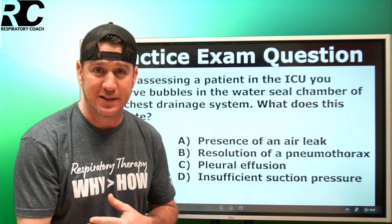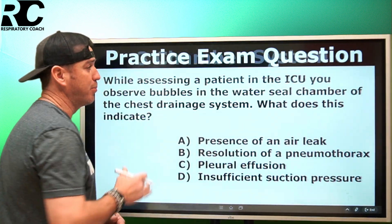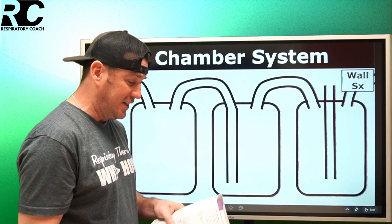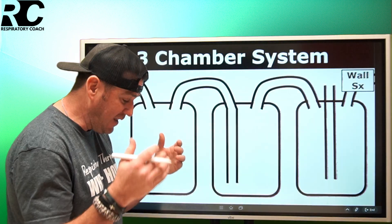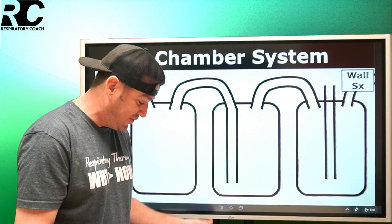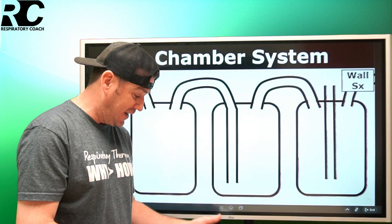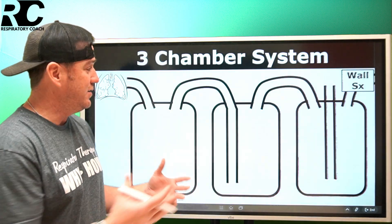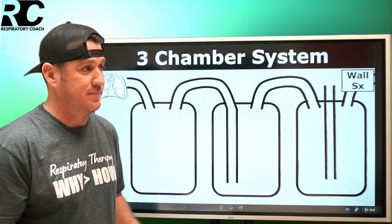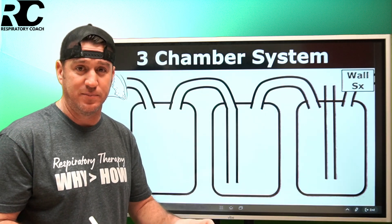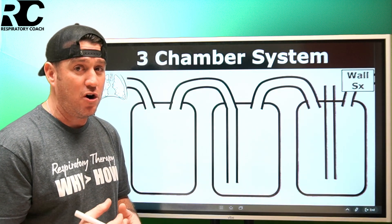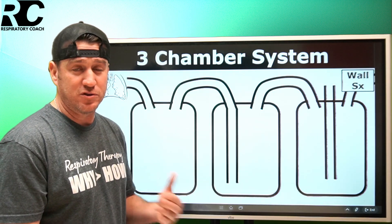We're going to come back to that question in just a second, but let's first break down the three-chamber system. Egan's 13th edition, chapter 27, page 552, states that three-bottle systems are now integrated into commercially available chest drainage systems that house each bottle component in a compact system. Most likely you haven't seen a literal three-bottle setup in the hospital, but the commercially available systems you've worked with all operate off these principles.